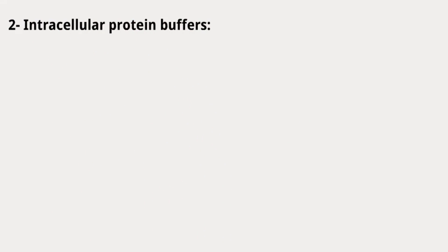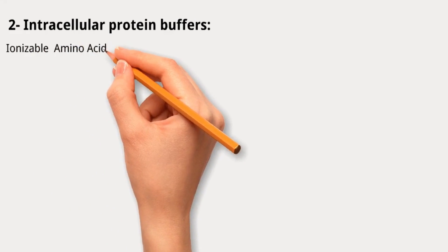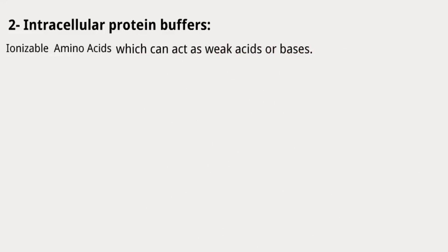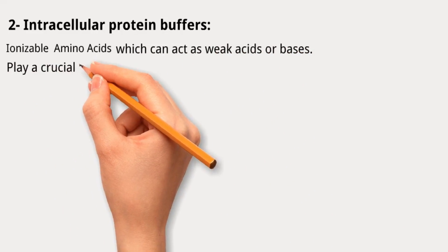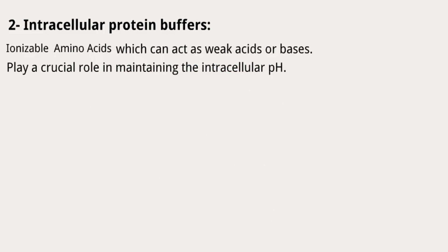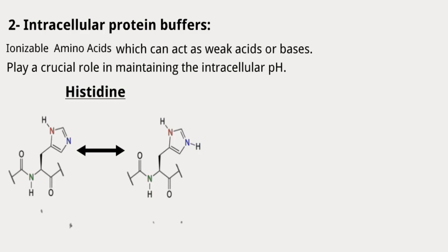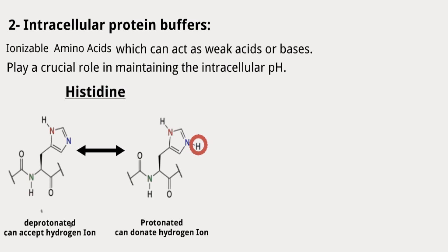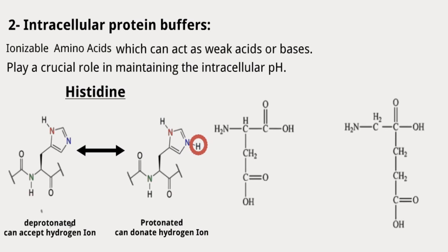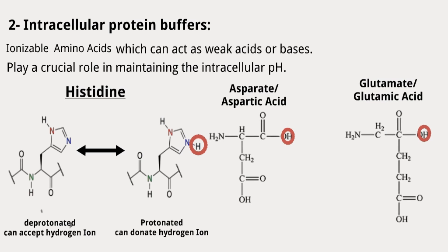The second mechanism is intracellular protein buffers. These involve the presence of specific amino acids and their ionizable side chains within proteins, which can act as weak acids or bases. These amino acids play a crucial role in maintaining intracellular pH by accepting or donating hydrogen ions. For example, histidine, aspartate, and glutamate can act as weak acids or bases. Histidine side chains can be protonated or deprotonated, acting as a buffer by accepting or donating hydrogen ions based on intracellular pH. Aspartate and glutamate side chains have a carboxyl group that can be deprotonated, so they act as buffers by accepting protons under acidic conditions.